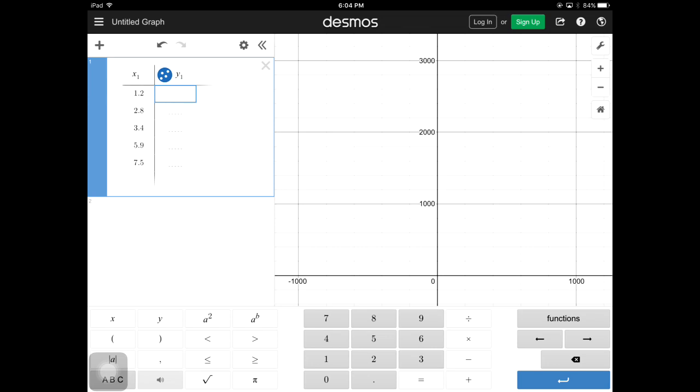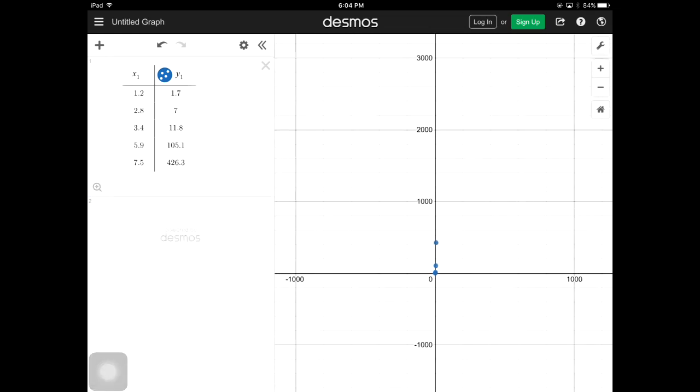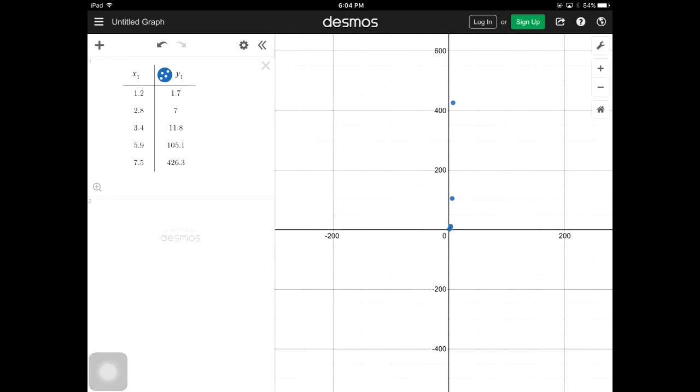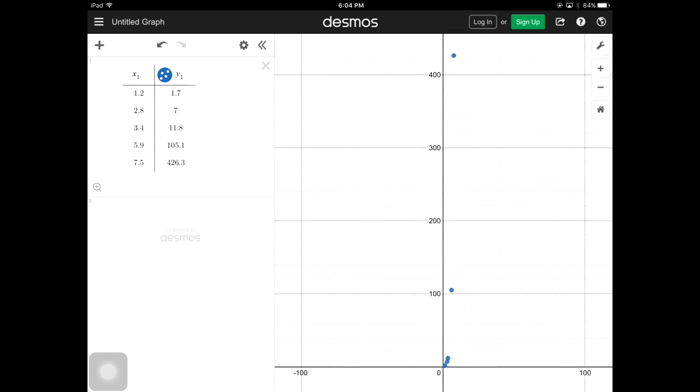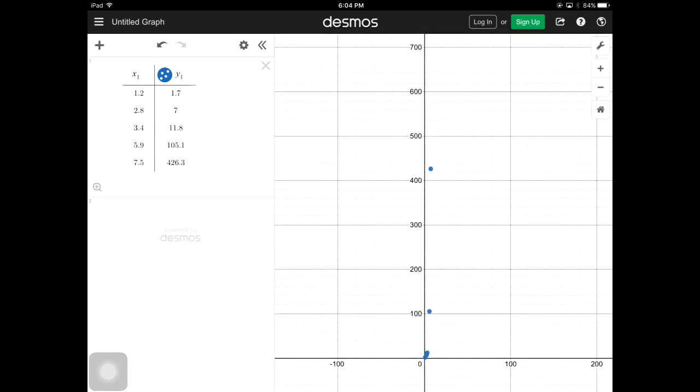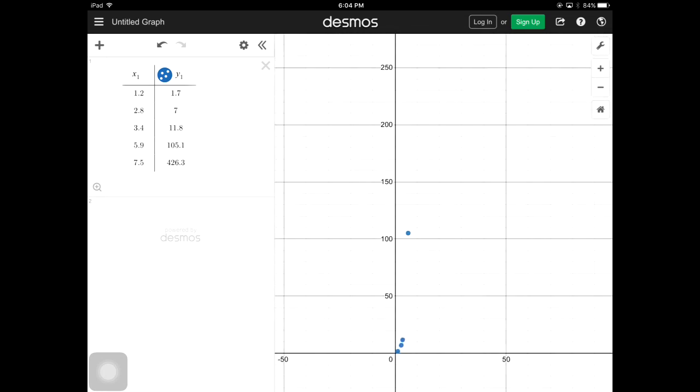So 1.2, 2.8, 3.4, 5.9, 7.5, and that's all the data for the x column. Make sure you double check that you did not type a number wrong. 1.7, 7.0, 11.8, 105.1, and 426.3.